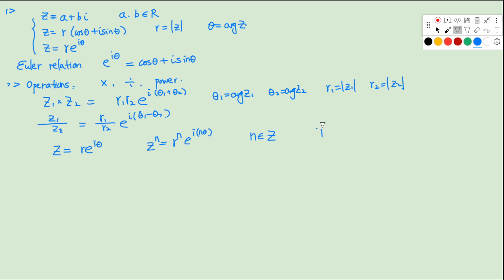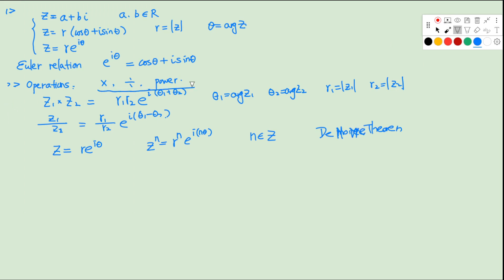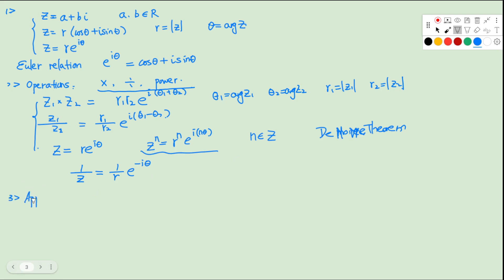This result is called De Moivre's theorem. To prove it, we can use mathematical induction to show it holds for all positive integers N. And we can use Z^(-1) equals (1/R) times e^(-i theta) to prove it holds for all negative integers as well.